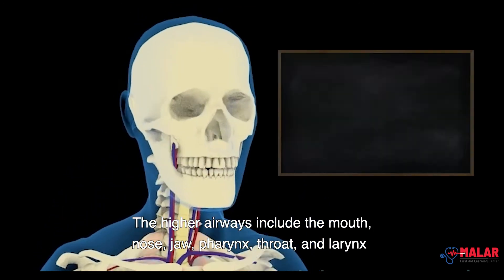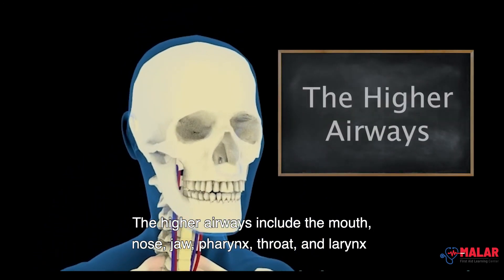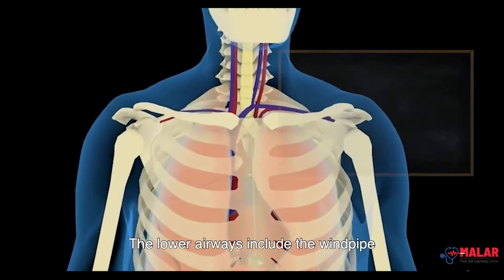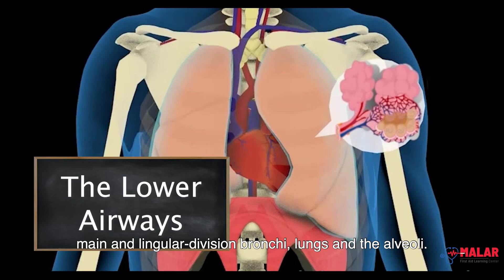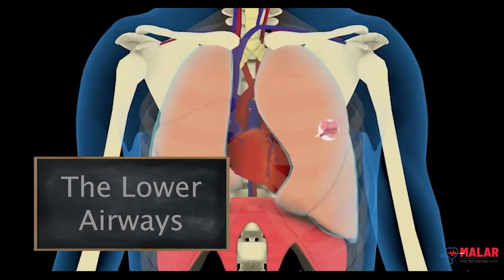The higher airways include the mouth, nose, jaw, pharynx, throat, and larynx. The lower airways include the windpipe, main and lingular division bronchi, lungs, and the alveoli.